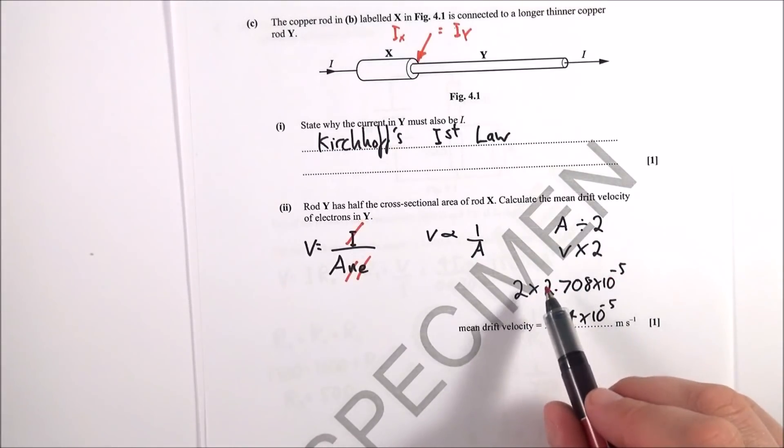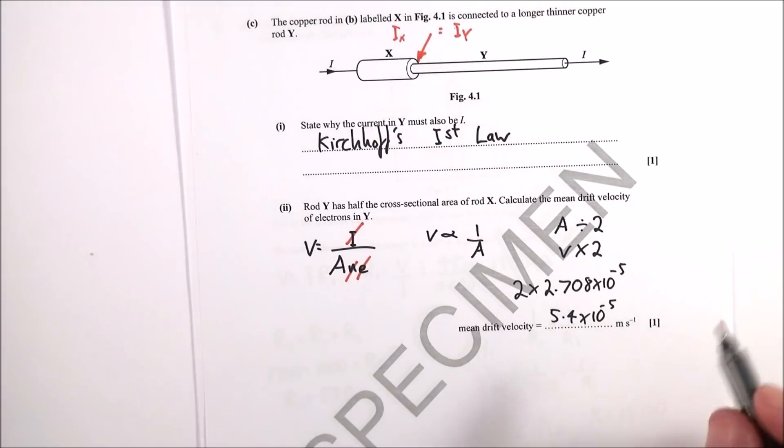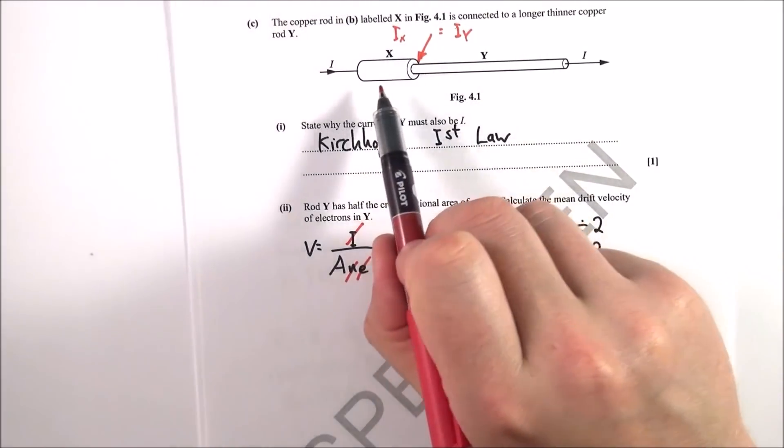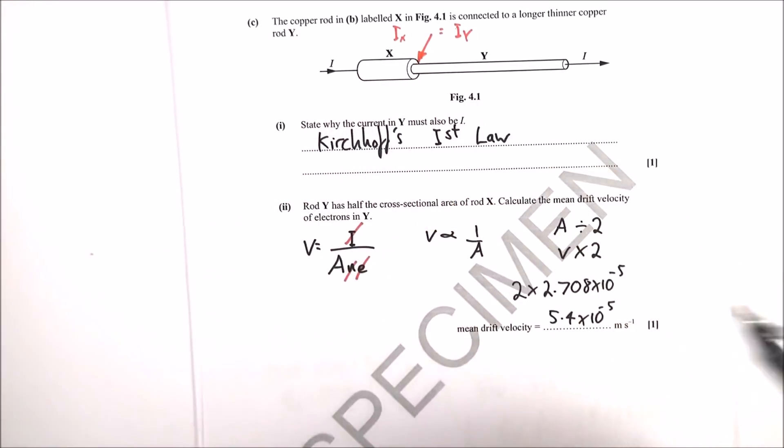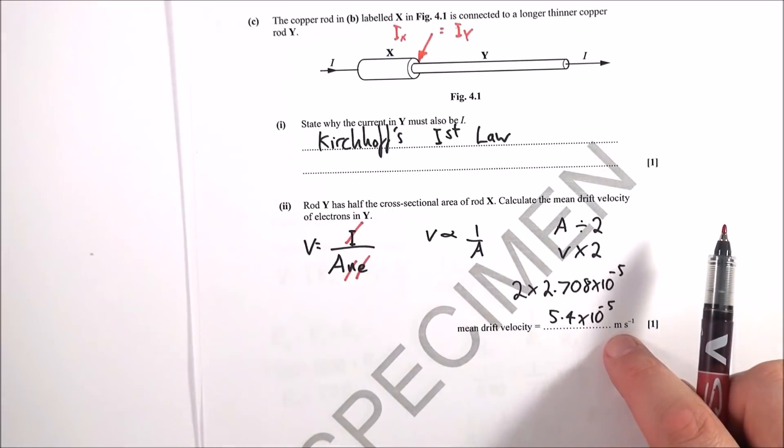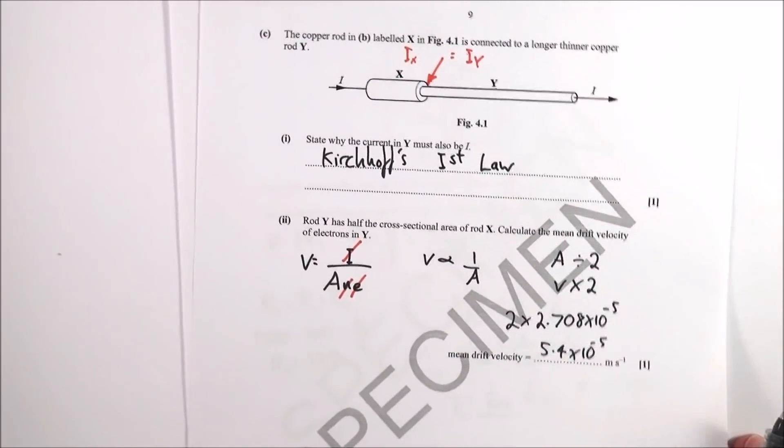Again, I used the raw number that was in my calculator, and that gave me a value then of 5.4 times 10 to the minus 5. So basically when the electrons go from here to here, they've got to get through a smaller area so they speed up. And that's basically the last part of that question. And the next video is all about question 5.